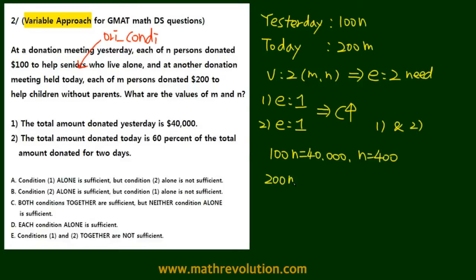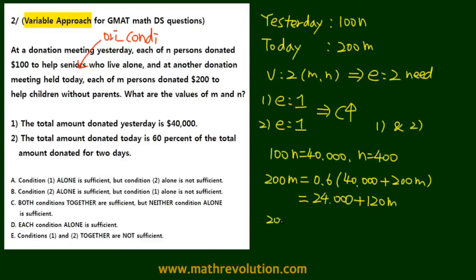Now what we have is 200m equal to 60%, which is 0.6, times 40,000 plus 200m, which is the total amount for two days. Then on the right side, we have 24,000 plus 120m. Collecting the like terms, 200m minus 120m is equal to 24,000.